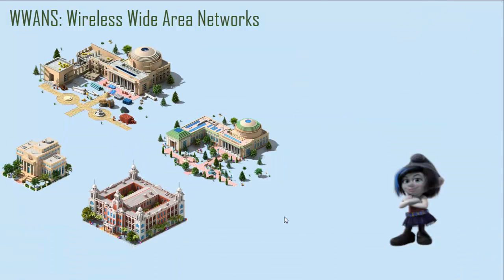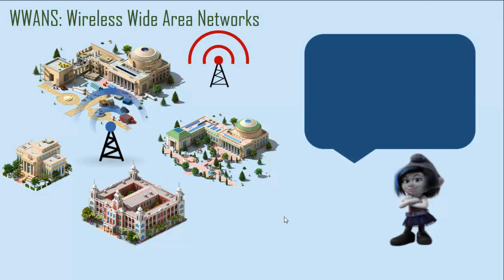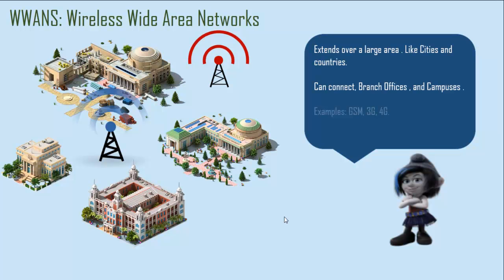Let's discuss them one by one. A wireless wide area network involves towers — you might have seen them when travelling in the city. This network extends over a large area: it may be a city, a town, or an entire country. It helps connect various parts of the city together, and the technology that makes this happen is GSM, 3G, or 4G.